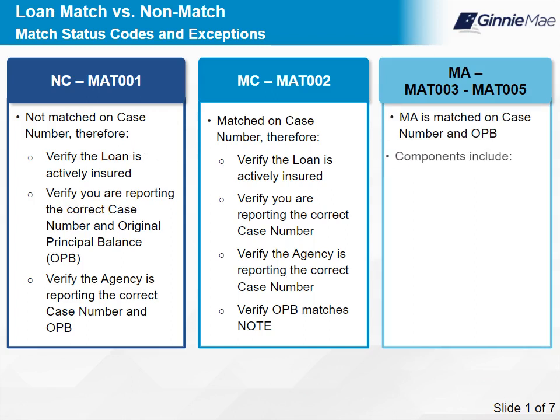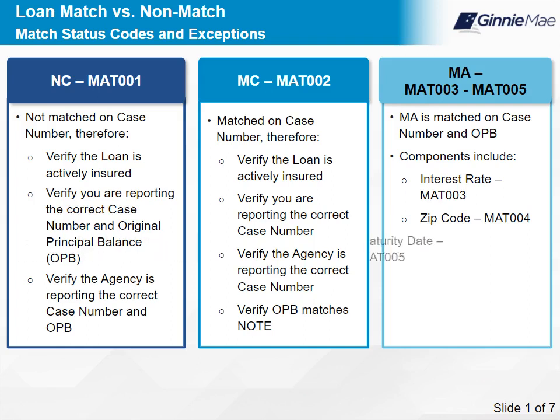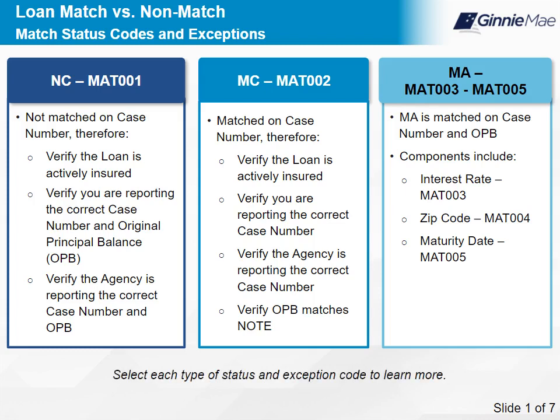The first component of MA is interest rate (MAT003): verify you are reporting the correct interest rate, then verify the agency is reporting the correct interest rate; if not, have it corrected. The second component is ZIP code (MAT004): verify you are reporting the correct ZIP code (first three digits), verify the agency is reporting the correct ZIP code (first three digits); if not, have it corrected. The final component is maturity date (MAT005): verify you are reporting the correct maturity date, verify the agency is reporting the correct maturity date; if not, have it corrected. Select each type of status and exception code to learn more. Select Next to continue.